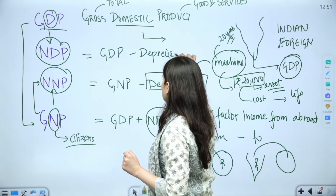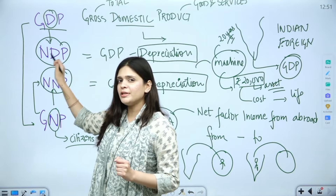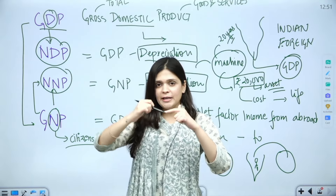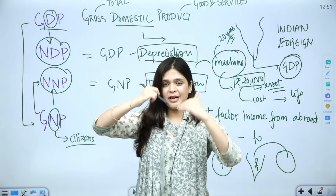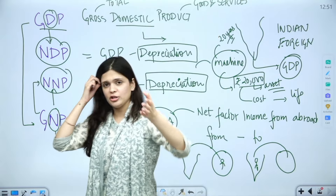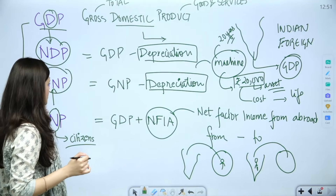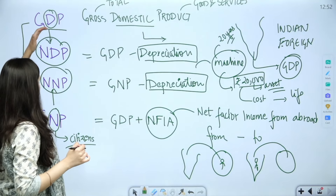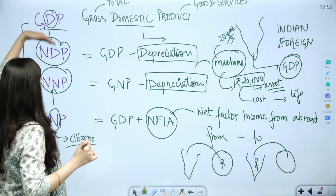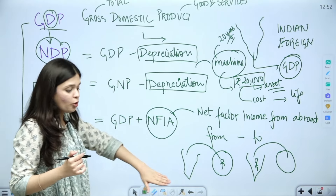To summarize: from gross to net, we subtract depreciation. So 'gross' means total, and 'net' means adjusted for depreciation. Similarly, from GDP to GNP we add NFIA, and from GNP to GDP we subtract NFIA. So these are your four terms.